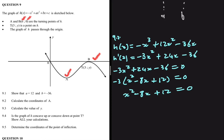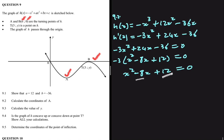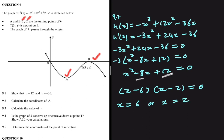We factorize x squared minus 8x plus 12: we need two numbers that multiply to 12 and add to minus 8, which are minus 6 and minus 2. So (x minus 6)(x minus 2) equals zero, giving x equals 6 or x equals 2. Since x equals 6 is the x-value at B, x equals 2 is the x-value at point A.